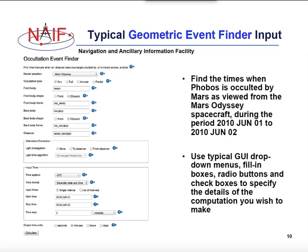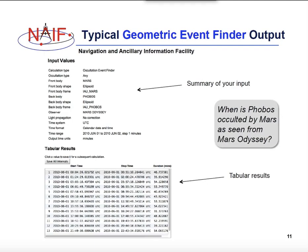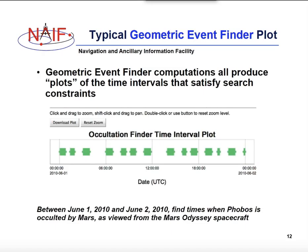Similarly, for Event Finder calculations, users would be presented with a set of menus where they specify their inputs and the set of kernels to be used. After clicking Calculate, they will get a set of time intervals — windows during which that geometric condition is met — and a plot which shows these intervals over the search domain.